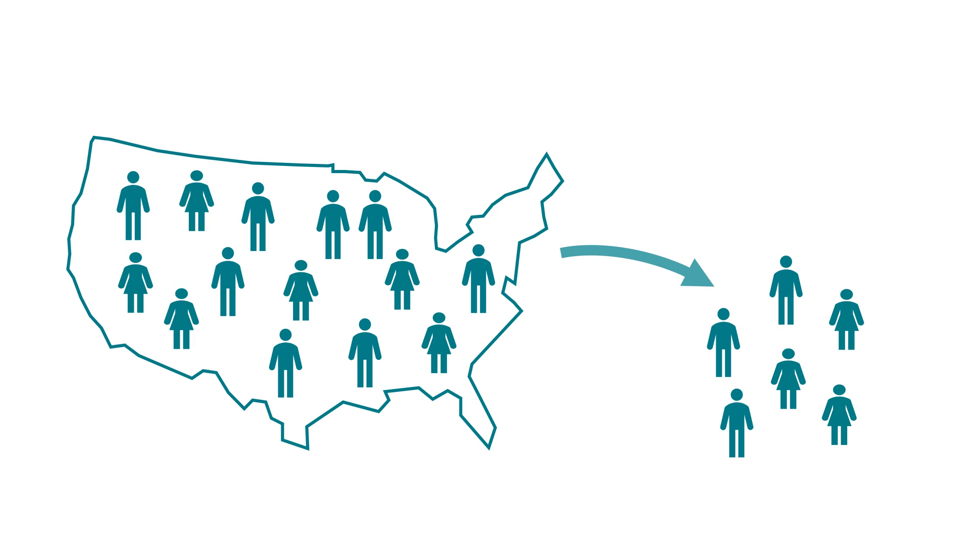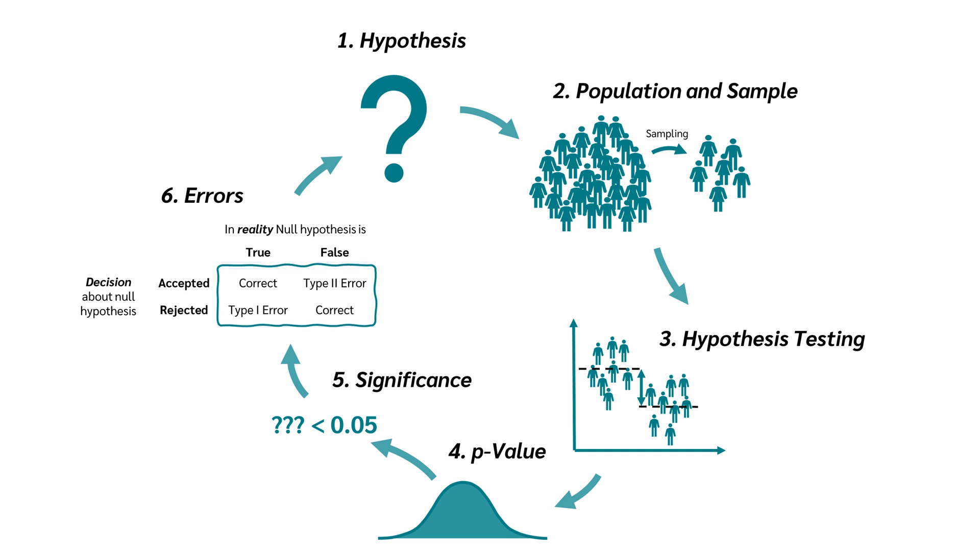The sample is the smaller group we actually study, chosen from the population. For example, 150 adults were selected from the United States. And now we want to use the sample to make a statement about the population. And here are the six steps how to do that.